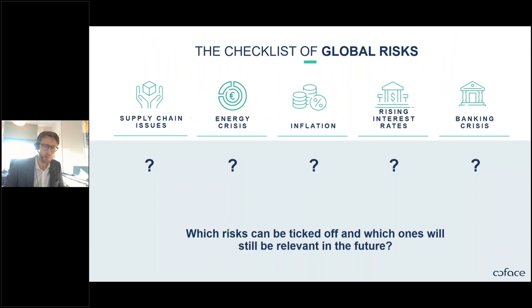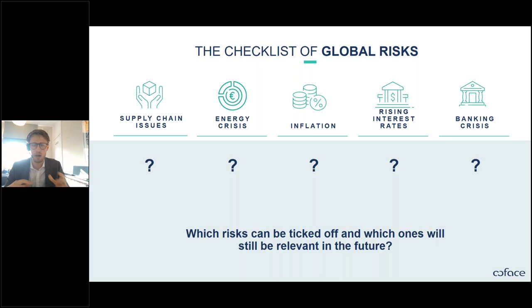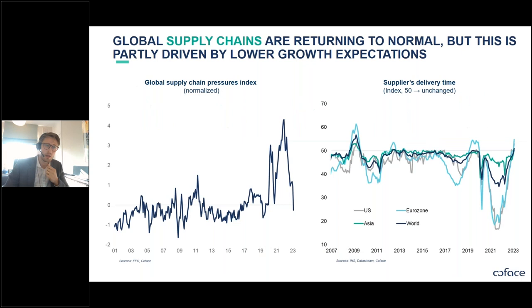Inflation is proving slightly more persistent than many people were hoping. Advanced economies are expected to stay in this stagflation environment in 2023, meaning growth potential this year won't be strong. Now, where do we see the global risks? I've identified five key ones that have been discussed quite a bit in recent years: supply chain issues, energy crisis, inflation, rising interest rates, and the banking crisis.